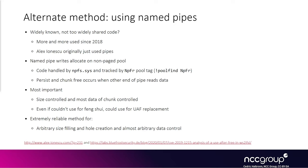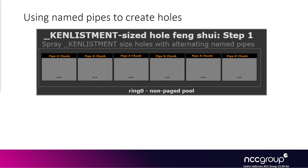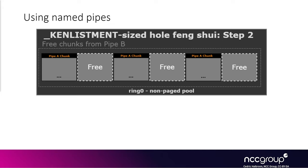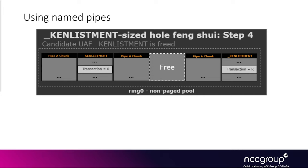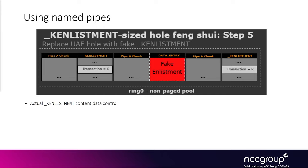This is the most commonly used technique for targeting the non-paged pool. We create two name pipes and alternate writes — pipe A and pipe B — in an alternating fashion, all of size k-enlistment structure. Then we read all data from pipe B, creating k-enlistment-sized holes. The k-enlistments for transaction R slot into those holes. We free the k-enlistment while triggering the bug, then write controlled data via a named pipe write to put it into the freed chunk, controlling the flink pointer offset.